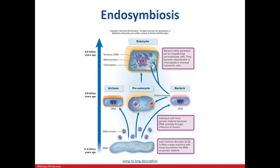Let's talk about endosymbiosis, which describes how our eukaryotic cells came about. Billions of years ago, we see the last common ancestor, which instead of DNA, had RNA as its genetic material. Scientists believe that viruses helped in the development of individual cells. We have archaea, our pre-eukaryotes, and bacteria. Evidence has shown that the pre-eukaryotes ate a photosynthetic bacterial cell and a bacterial cell that could undergo cellular respiration. These cells then developed into mitochondria and chloroplasts, and thus we have a eukaryote.